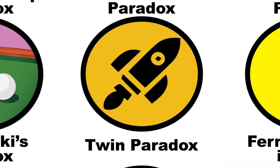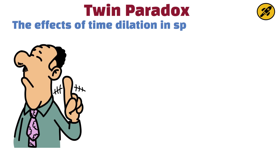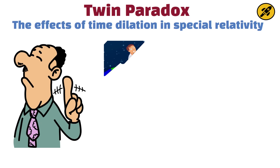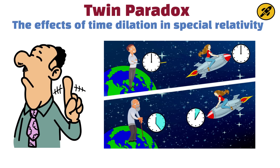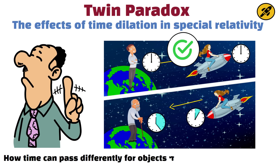While not strictly a time travel paradox, the twin paradox is related to the effects of time dilation in special relativity. It describes a scenario where one twin travels at near light speed and returns to find their earthbound sibling has aged more. This paradox, which is actually a proved phenomenon, demonstrates how time can pass differently for objects moving at different speeds.